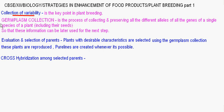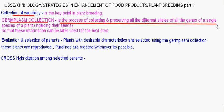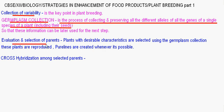Germplasm collection is the process of collecting and preserving all the different alleles of all the genes present in a single species of a plant, including their seeds. This information is then used in the next step. In summary, all the different types of alleles present in all the genes of a species are collected and preserved — this technique is called germplasm collection.